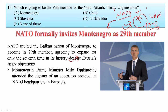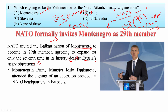Montenegro became the 29th member of NATO. Your answer is A. NATO's headquarters is in Brussels, Belgium, and the Secretary General is Jens Stoltenberg. Montenegro is surrounded by countries like Austria, Bosnia, Kosovo, and Albania. The capital of Montenegro is Podgorica. These are important details to remember for the exam.